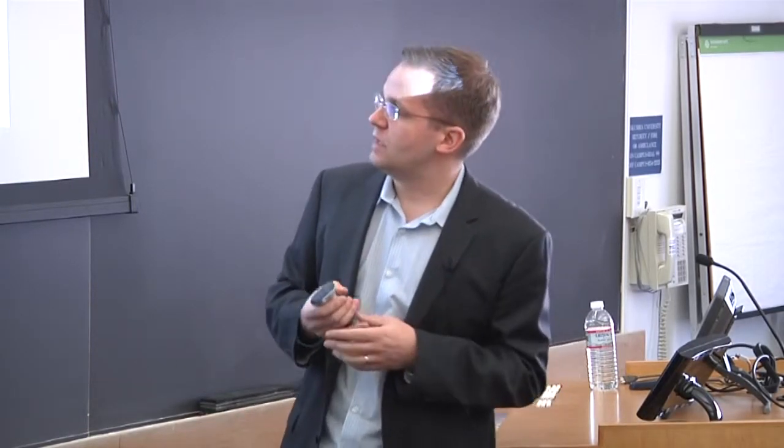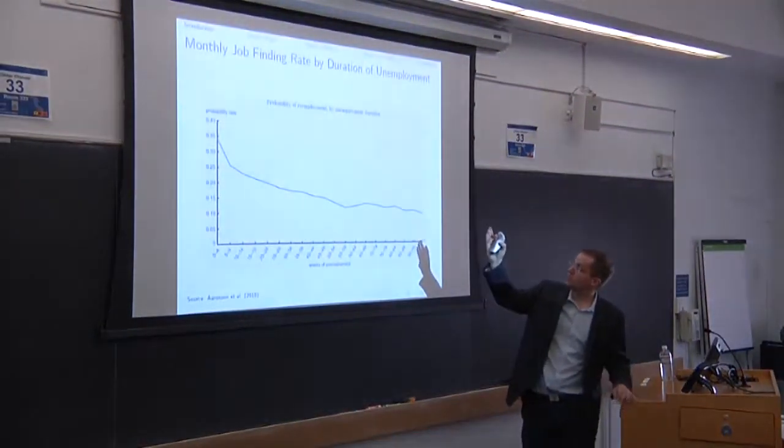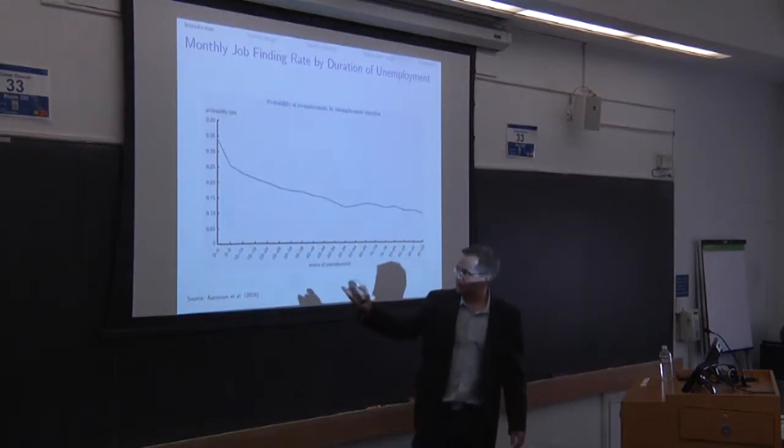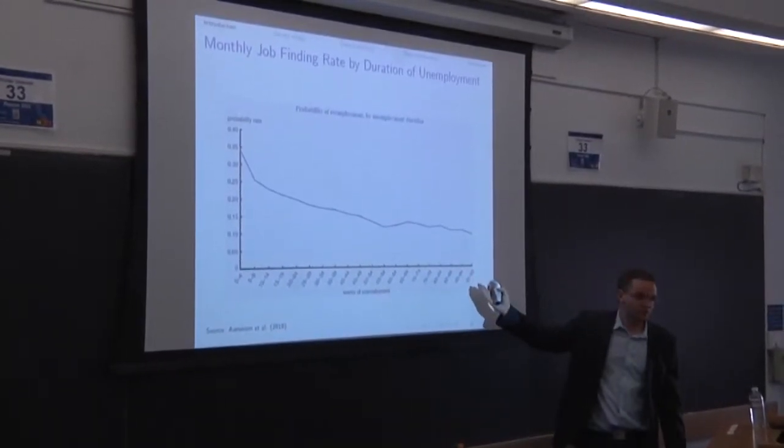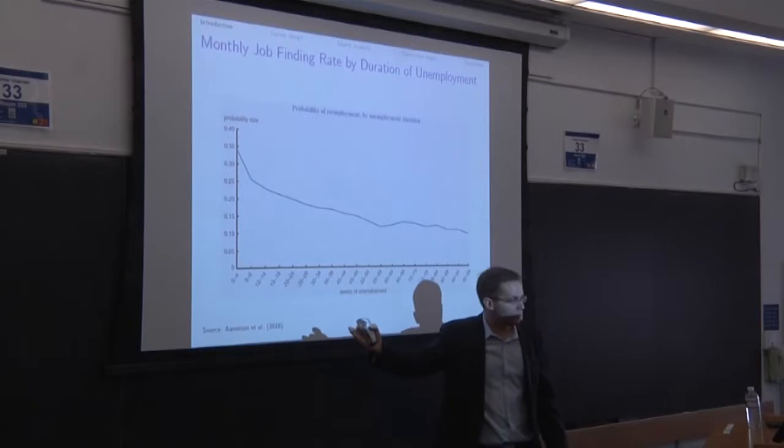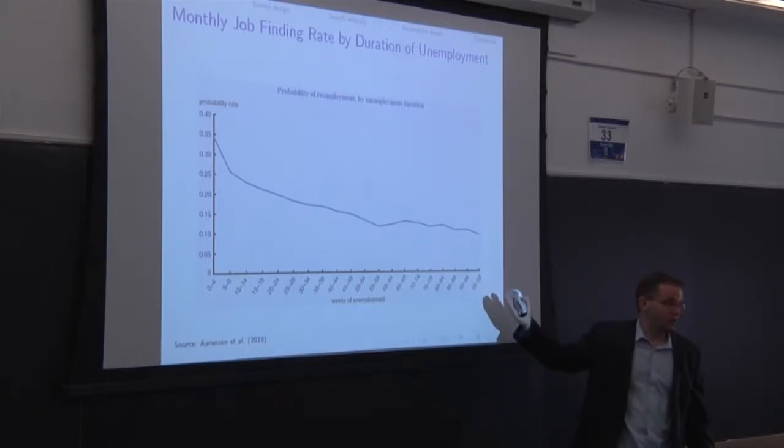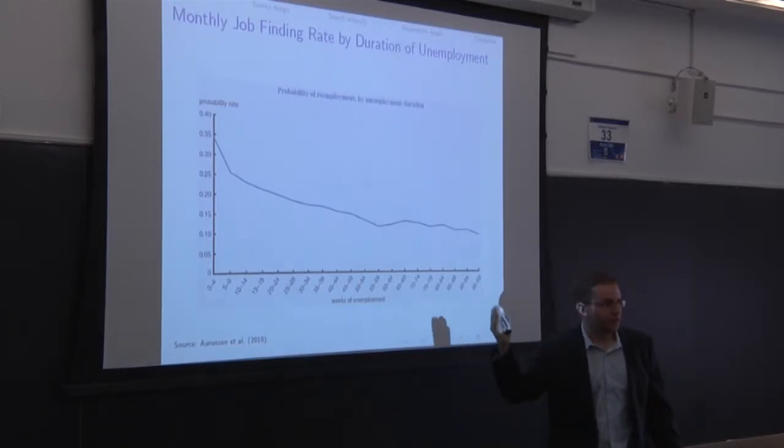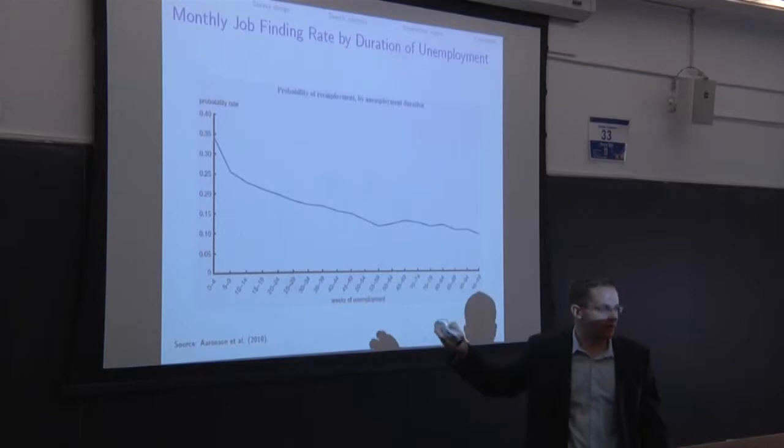And I just want to look at, so one way people think about that, often people look at graphs like this. This is not from my research, but just from another paper. And what this plots here is the monthly job finding rate by duration of unemployment. So here we look at people that have been unemployed zero to four weeks, and here we look at people that have been unemployed for almost two years. And you can see that people that have been unemployed for zero to four weeks, they have a much higher probability of finding a job than those that have been unemployed for over two years.